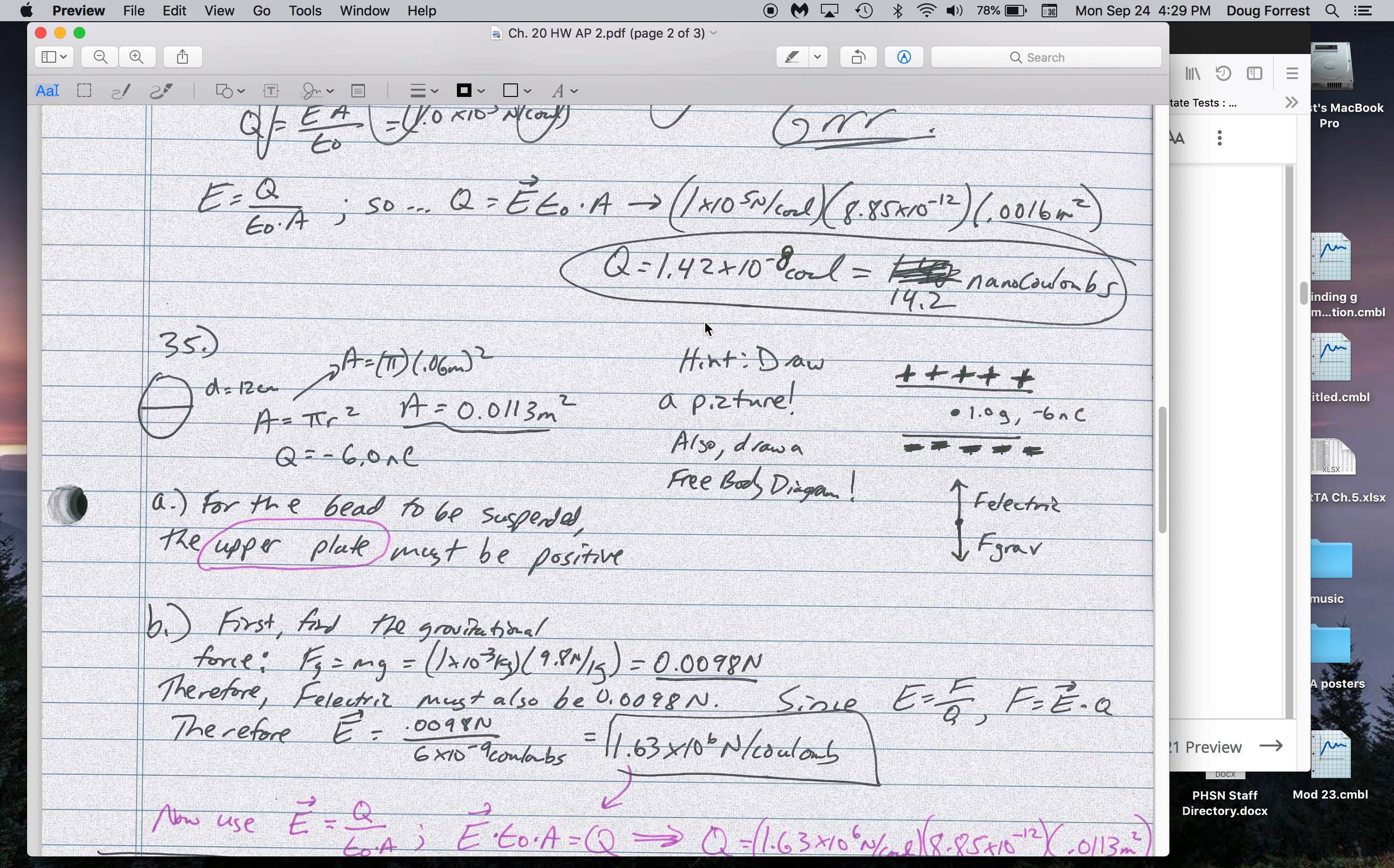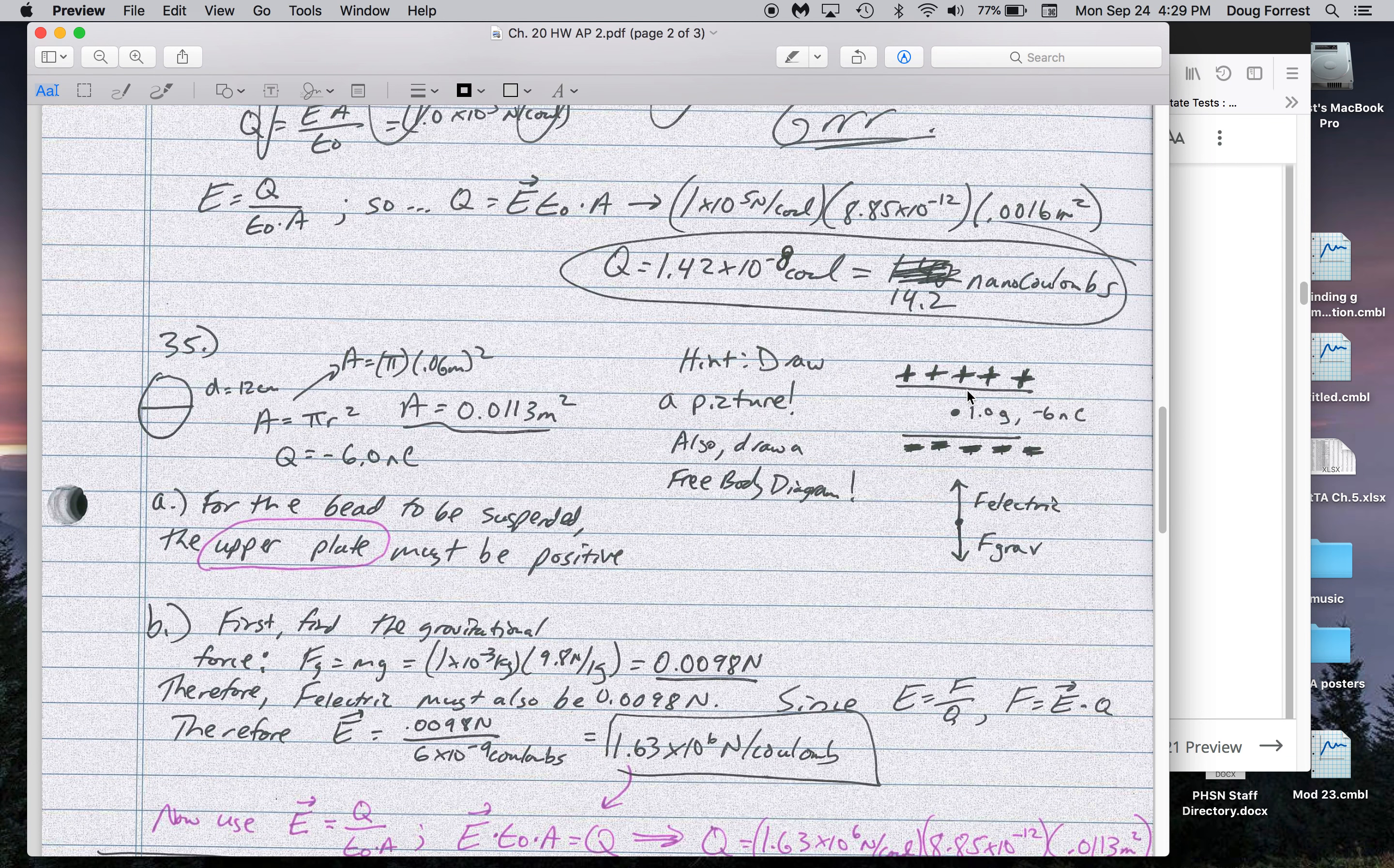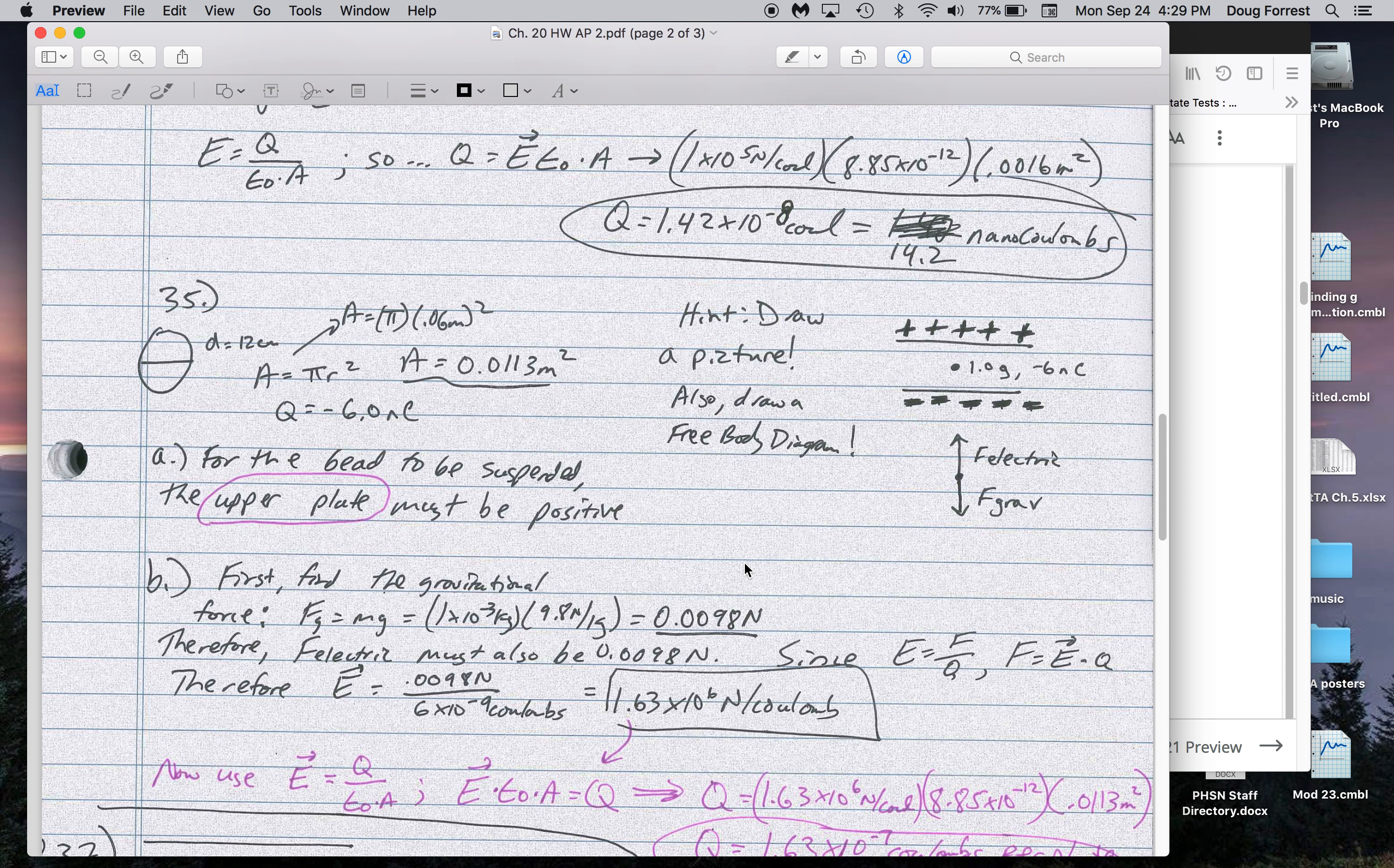Number 35. When we went over this, I believe in class also, so I drew a little picture. This is one of the circles. This is another one of the circles I'm drawing sideways. So if this negatively charged mass is in between them and it's hovering, it means the top part has to be positive, the bottom part has to be negative. It means the electric force upward is balanced by the gravitational force downward.